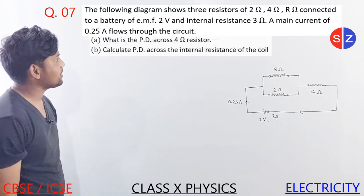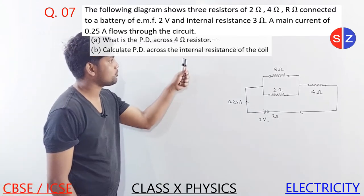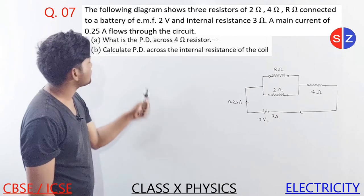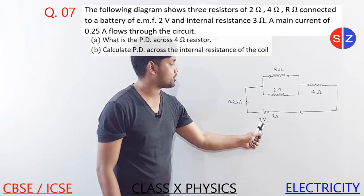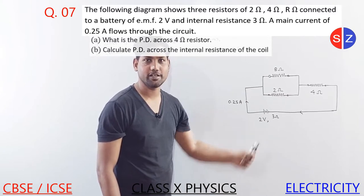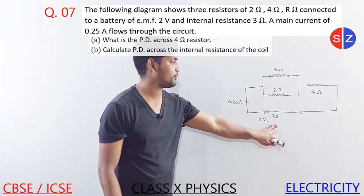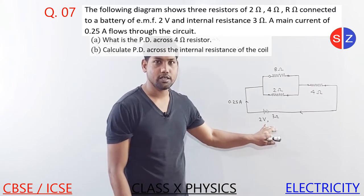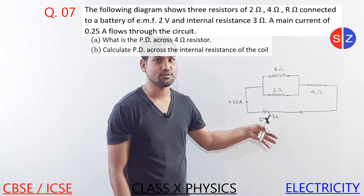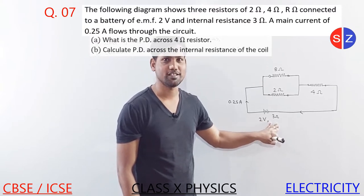We need to find the PD across the 4 ohm resistor and the PD across the internal resistance of the cell. There is a battery of 2 volts and internal resistance is 3 ohm. What is internal resistance? The battery electrolyte has its own resistance. It is called internal resistance.